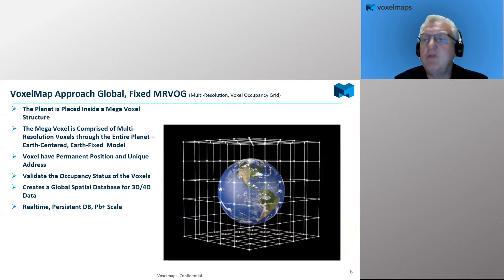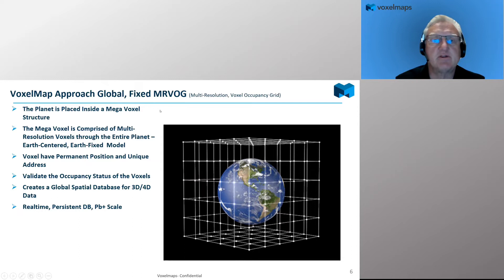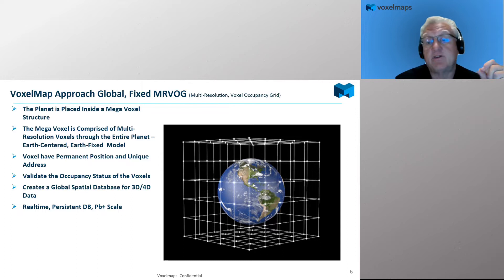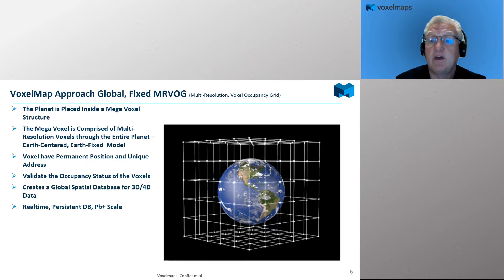What's unique about our approach is a global fixed voxel occupancy grid — a mega voxel structure comprised of multi-resolution voxels across the entire planet. It's an earth-centered, earth-fixed model, which is a standard Cartesian environment with XYZ coordinates, but instead of zero-zero being an island off the west coast of Africa, this is actually centered on the center mass of the earth.